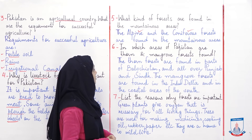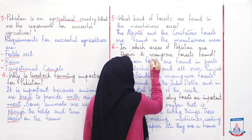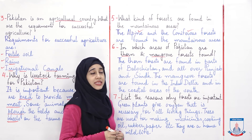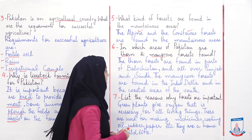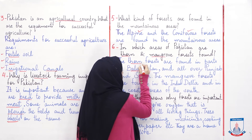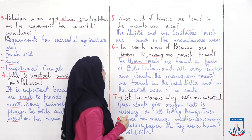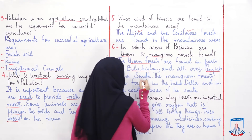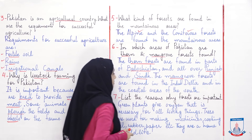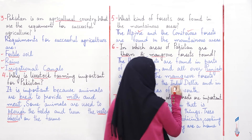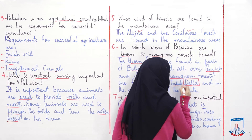In which areas of Pakistan are thorn and mangrove forests found? اب وہ آپ سے پوچھ رہا ہے کہ thorn اور mangrove forests آپ کو Pakistan کے کن areas میں ملتے ہیں؟ So the thorn forests are found in parts of Balochistan and all over Punjab and Sindh. Then talking about the mangrove forests — the mangrove forests are found in the Indus Delta.